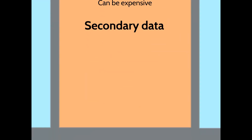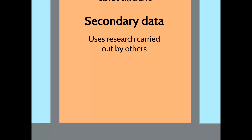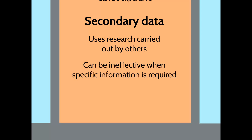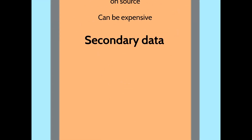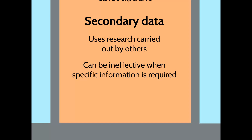Secondary data is far more cost effective but uses research carried out by others, and therefore it's quite limited in its scope and accuracy. When specific information is required it can be quite ineffective — unless there's some body of government statistics listing everyone's favourite pie flavours, which is very unlikely, it won't help answer questions about new pie flavours. But it can be useful for more generic things, such as hiring new staff. To create a recruitment strategy, you might need to know the unemployment rate in the area, which would be available on a government website — making it very easy and cost effective to use research already done by others.